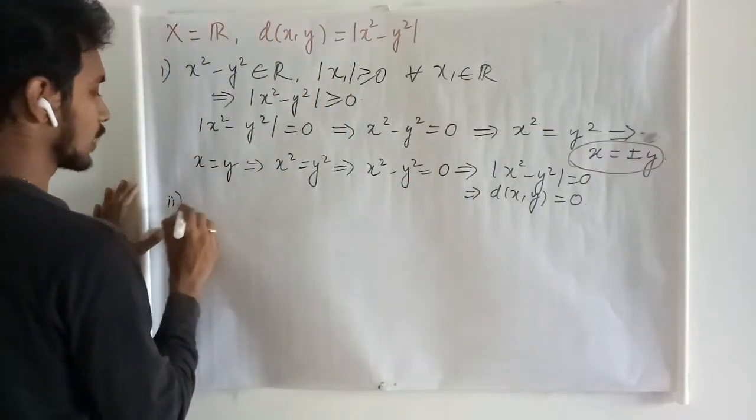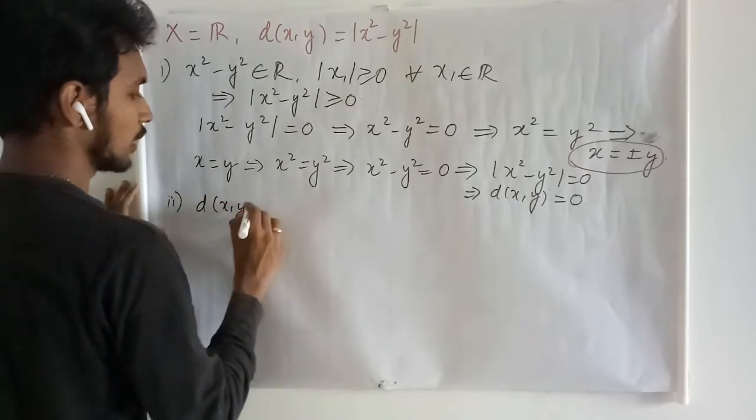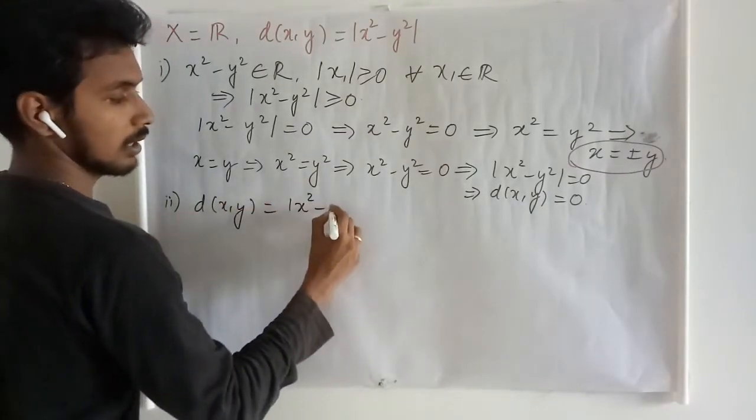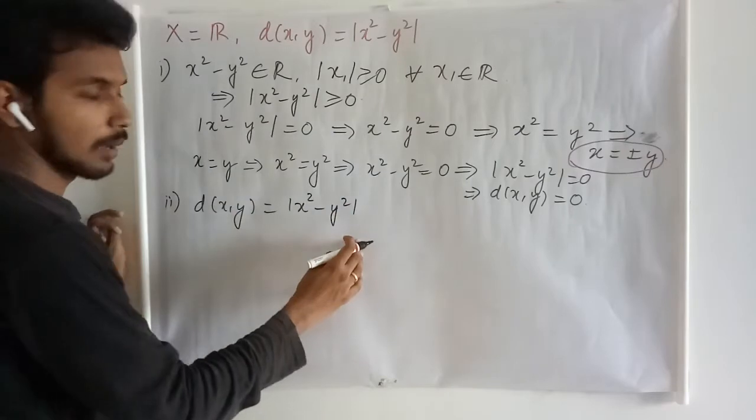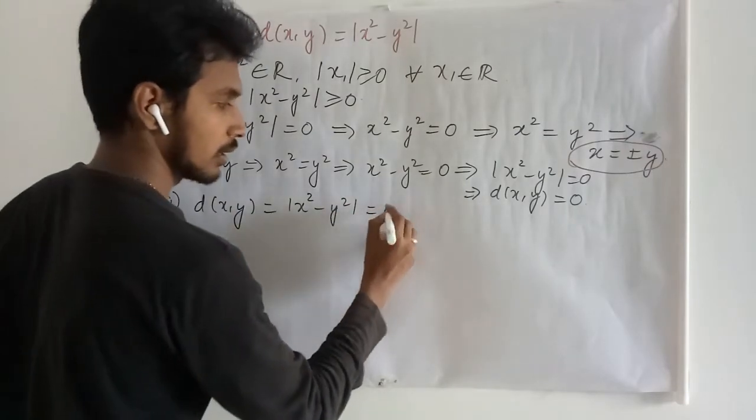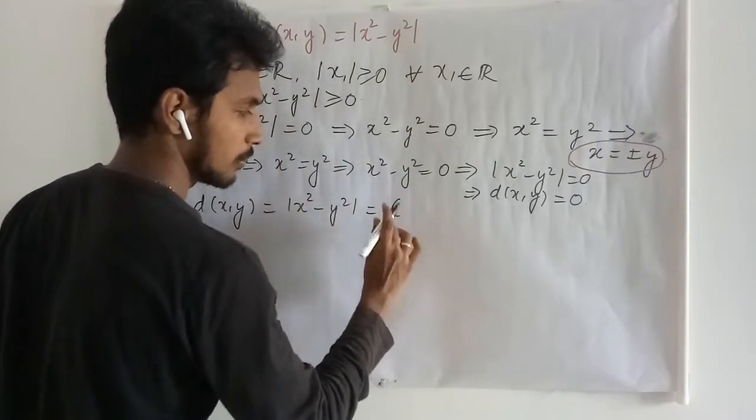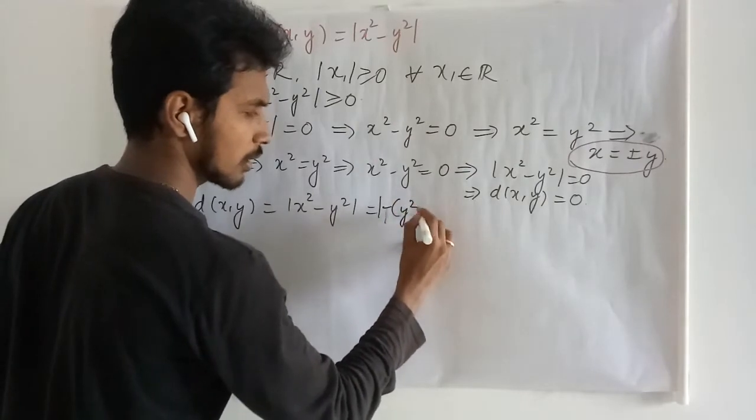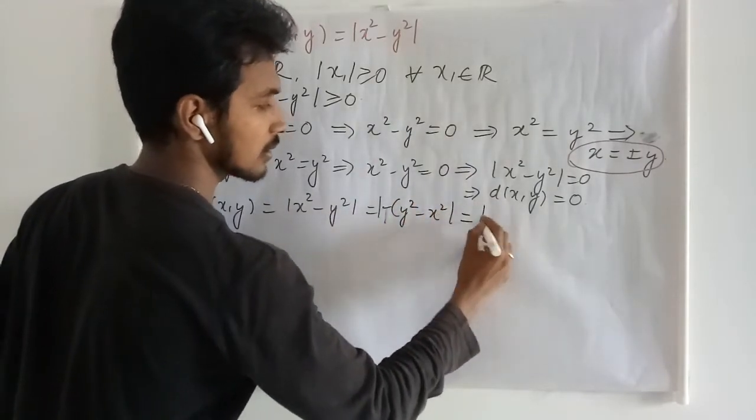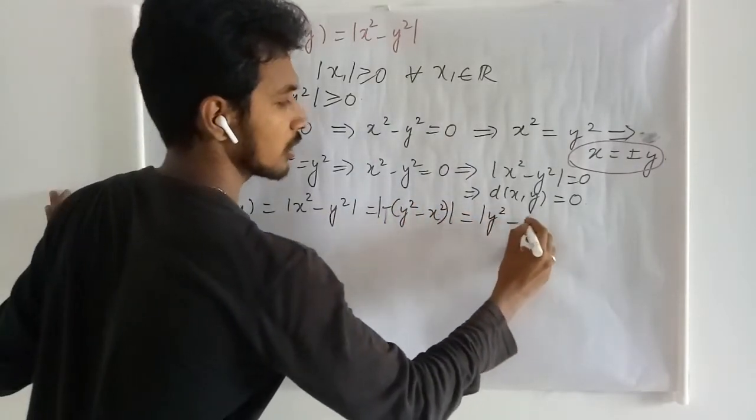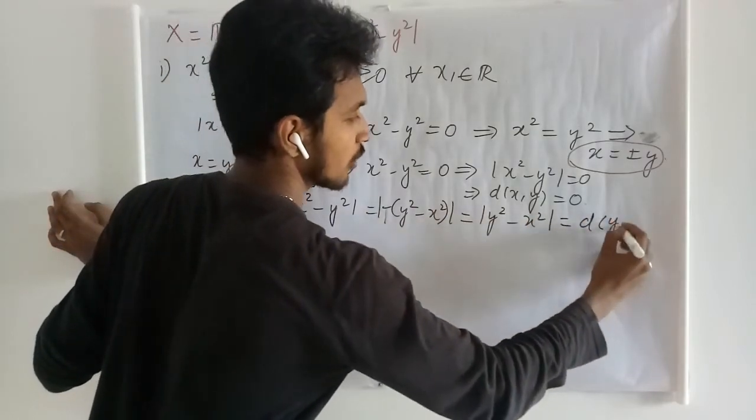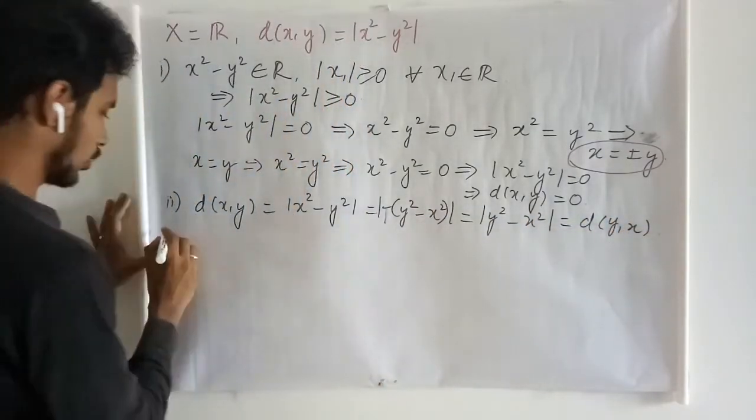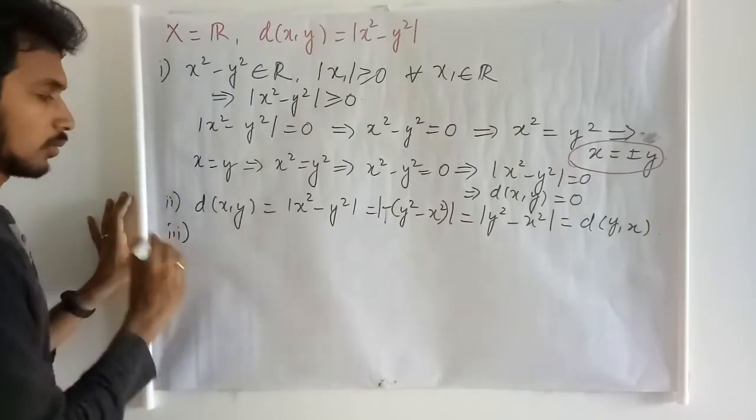Second one: d of x, y, that is equal to absolute of x squared minus y squared. This is minus times of y squared minus x squared, and this is nothing but absolute of y squared minus x squared, and this is d of y comma x.